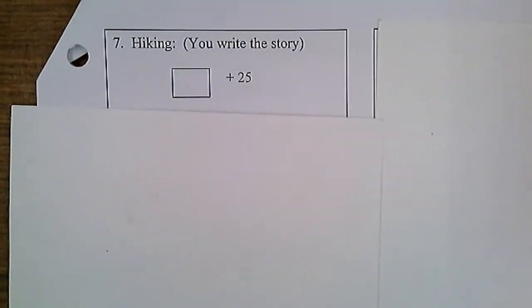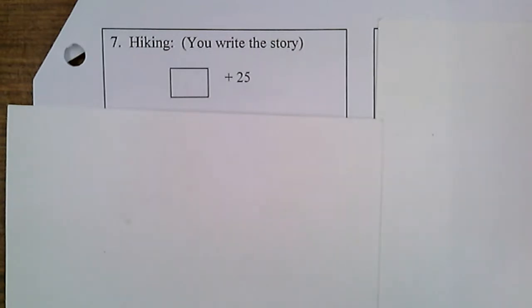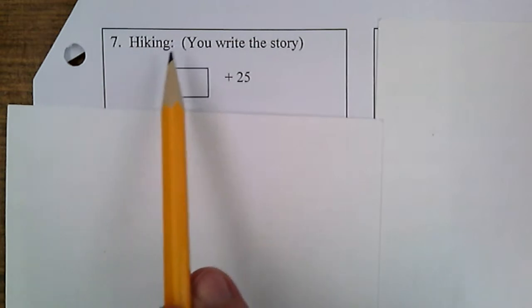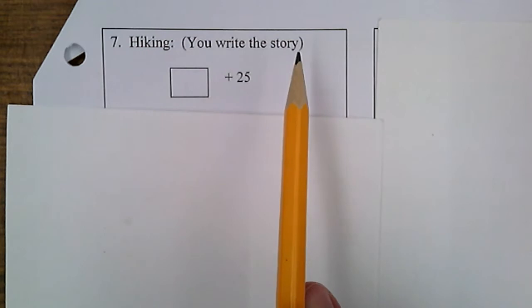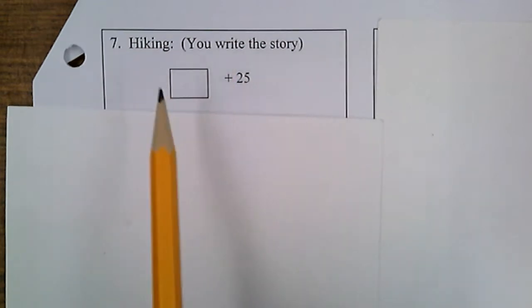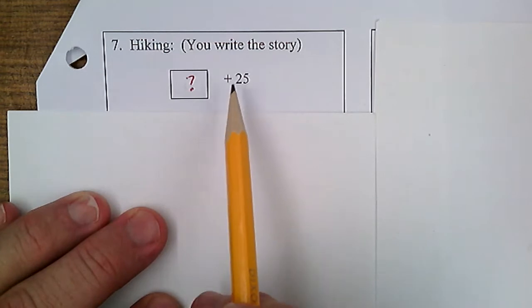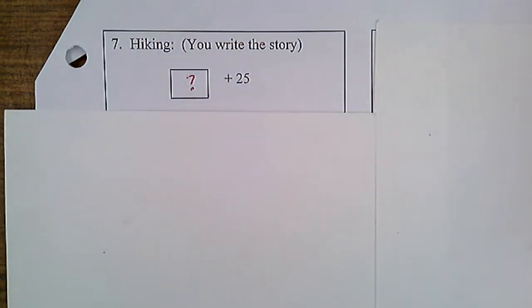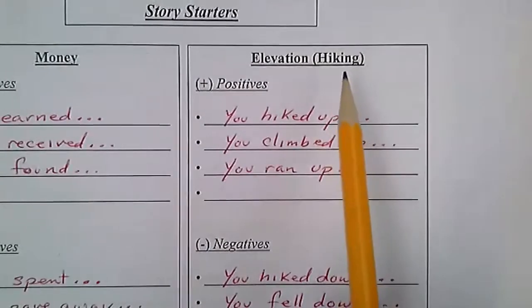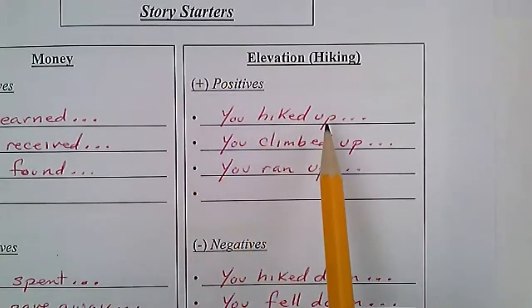Now you are going to have to write stories, and this is where I'd suggest you use your story starters. On number seven, I'll do it with you — then you'll have to do eight, nine, and ten on your own. You have to write a story that has to do with hiking. Here's the picture: there's an unknown amount, so I'll put a question mark because that's unknown, and then we know we are adding 25. Looking at my hiking starters, positives mean you hiked up, climbed up, or ran up.